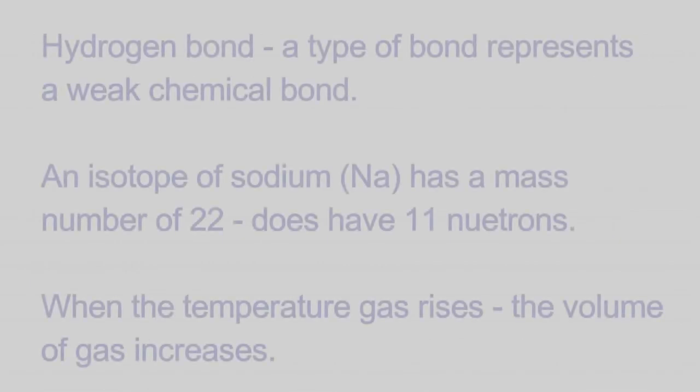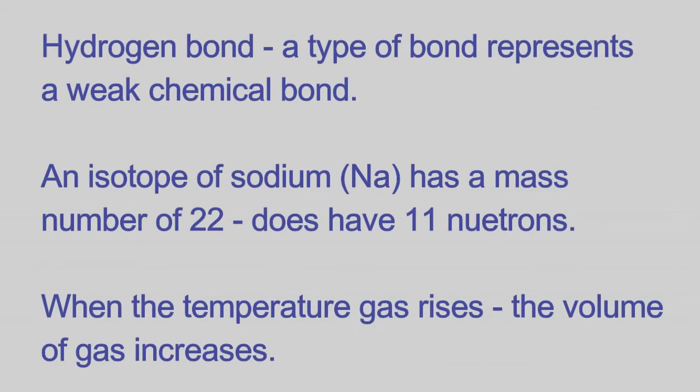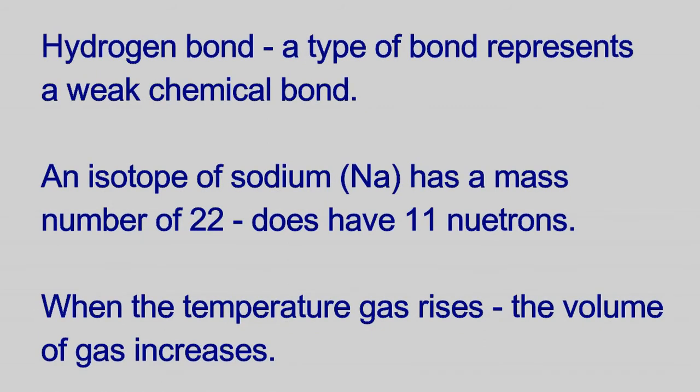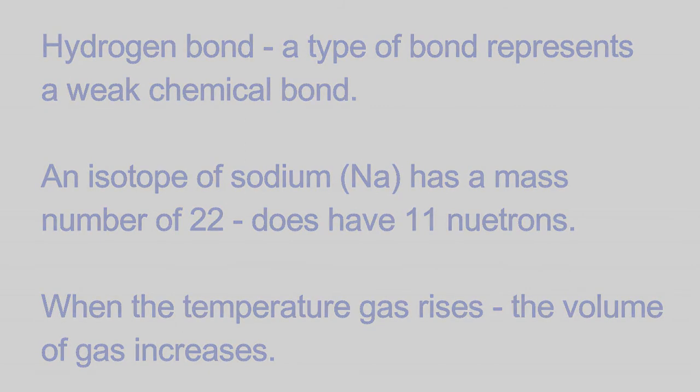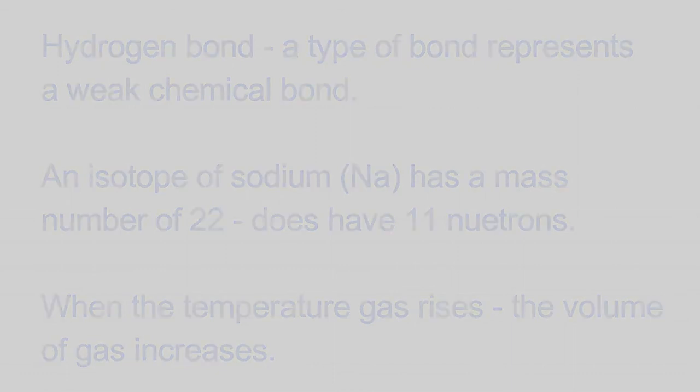Hydrogen bond, a type of bond, represents a weak chemical bond. An isotope of sodium (Na) has a mass number of 22, does have 11 neutrons. When the temperature gas rises, the volume of gas increases.